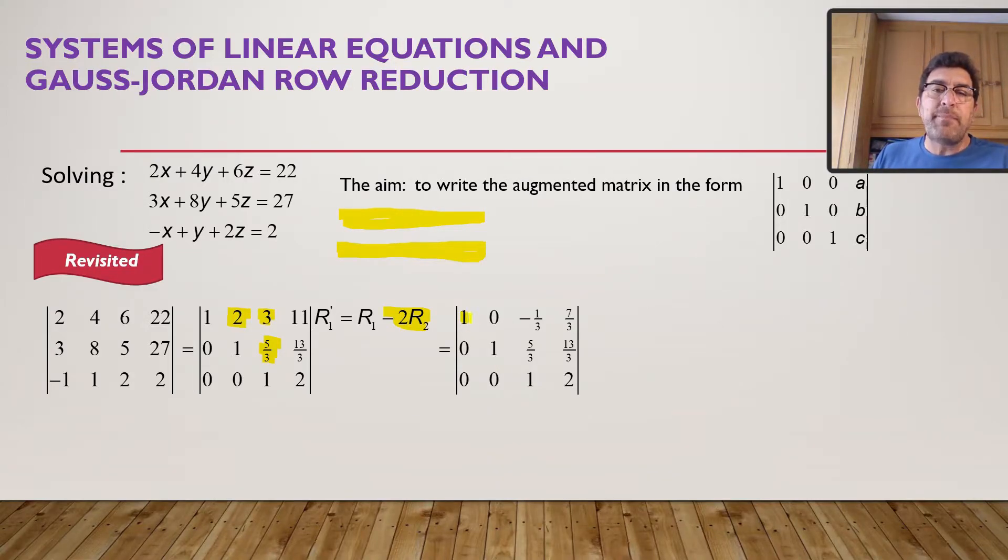Now, I'm happy with that. I'm going to work on these two entries. That must become a 0, and this must become a 0. Now folks, for this, remember when you did Gaussian reduction.